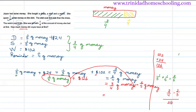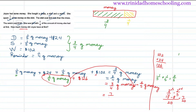So now we have three-quarters take away two-fifths. The LCM is 20. Four into 20 is 5, and 5 × 3 = 15. Five into 20 is 4, and 4 × 2 = 8. So 15 − 8 = 7, giving us 7 out of 20.